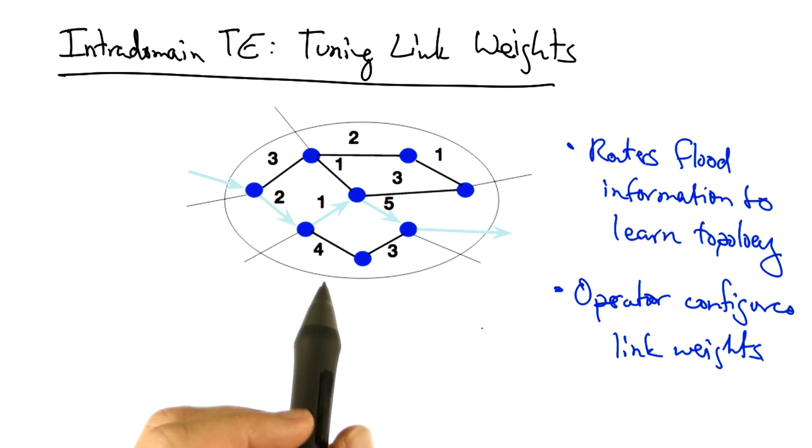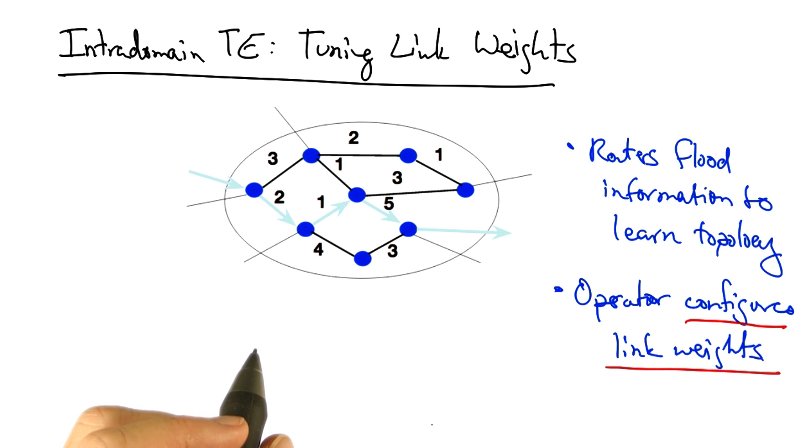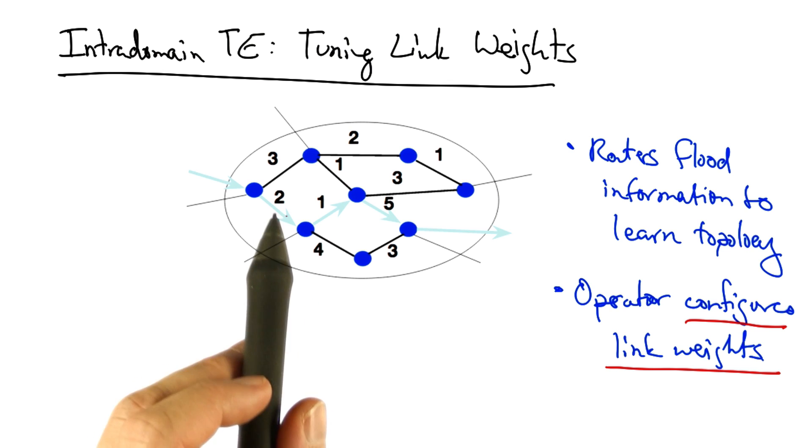An operator can affect how traffic flows through the network by configuring the link weights. By changing the link weight configuration, an operator can affect the shortest path between two points in this graph, thus affecting the way that traffic flows.